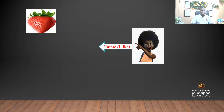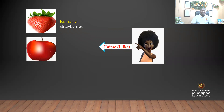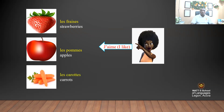J'aime les fraises — I like strawberries. J'aime les pommes — I like apples. J'aime les carottes — I like carrots. So in French, when you want to express what you like, you say j'aime. J'aime les fraises, j'aime les pommes, j'aime les carottes.